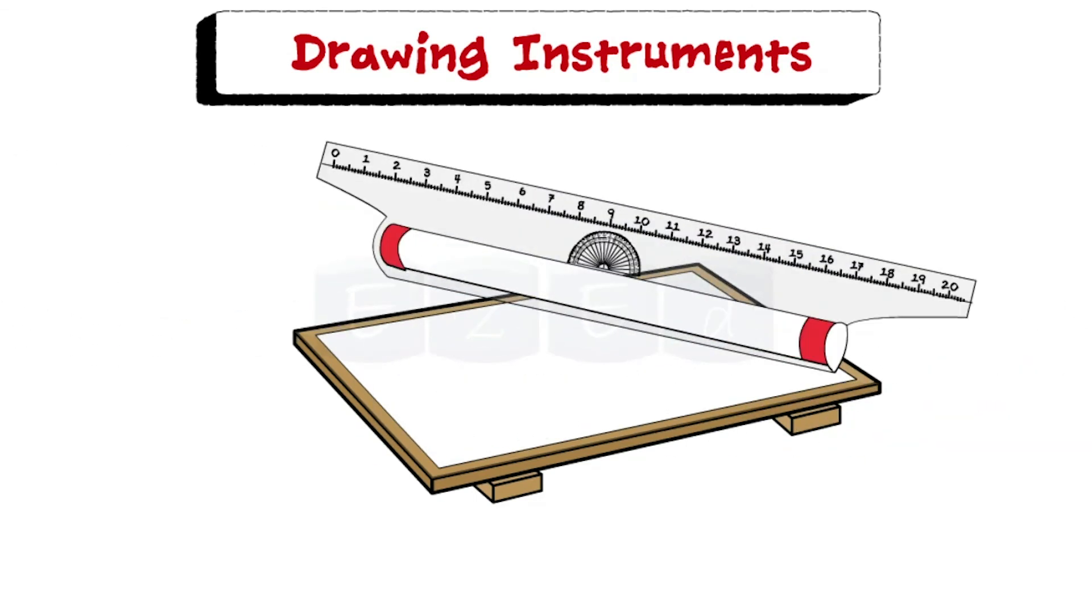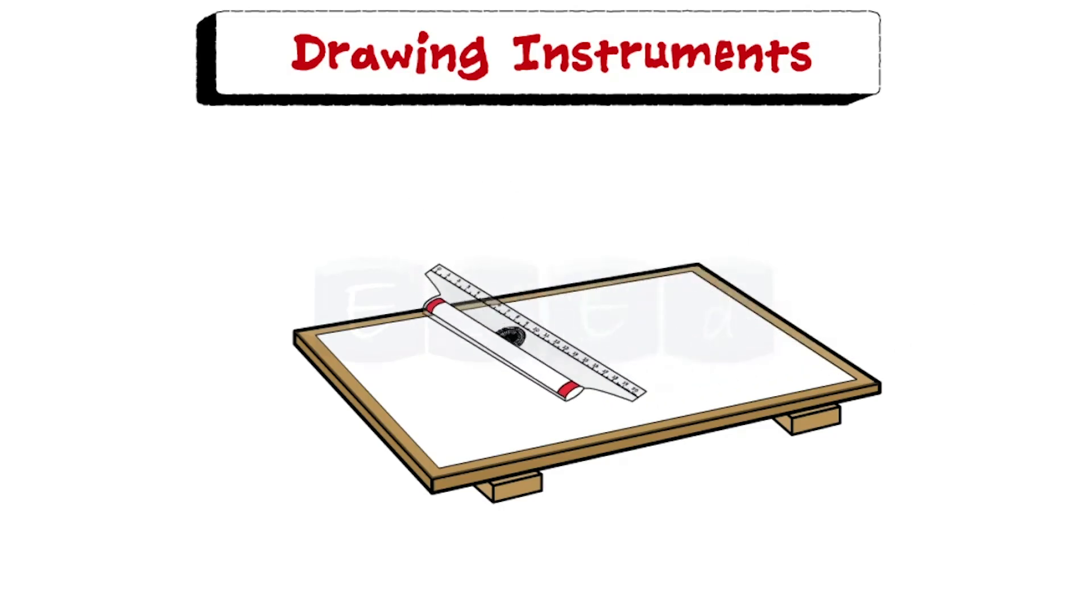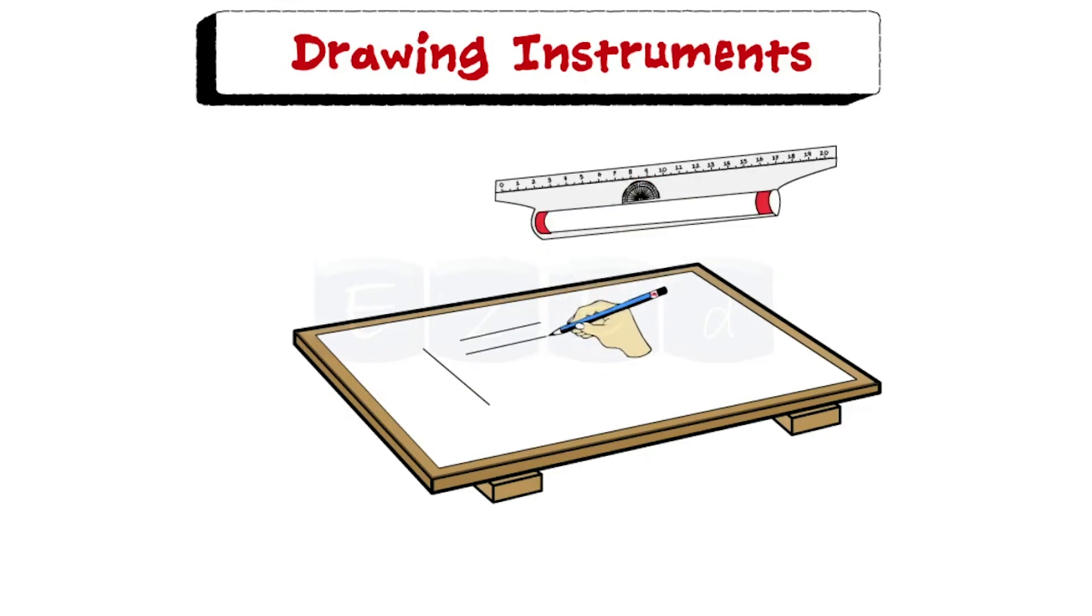Next is a roller scale. It has a roller in it. It is used for drawing vertical lines, horizontal lines, parallel lines, angles and circles.